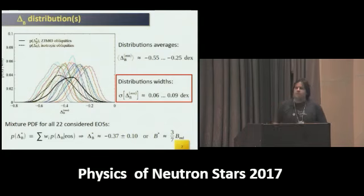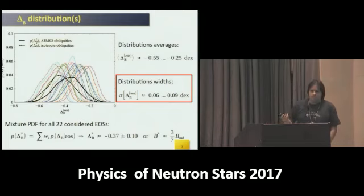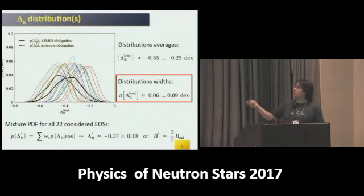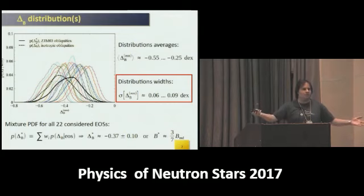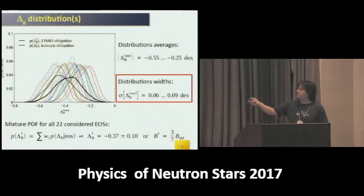In general, if you don't want to deal with choosing your favorite equation of state, you can average all these distributions to make a mixture probability density function, simply assuming all equations of state have equal chances to be realized in nature. Then you get the generalized distribution for anisotropic and isotropic obliquities.